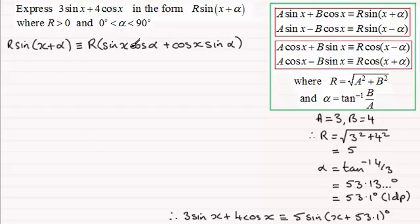So expanding that then, it's going to be R times the sine of x multiplied by the cosine of alpha, and then it'll be plus R times the cosine of x multiplied by the sine of alpha. So expanding the bracket, I'm going to write it as R cosine alpha multiplied by sine x, and R sine alpha multiplied by cosine of x.